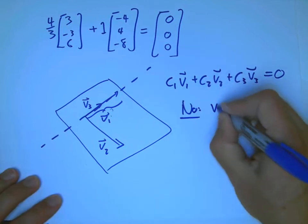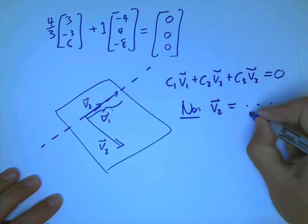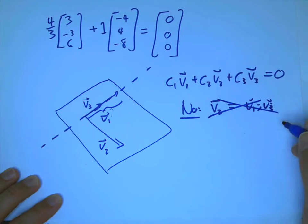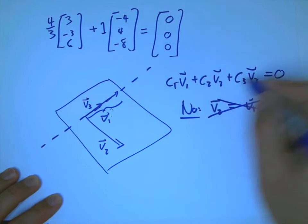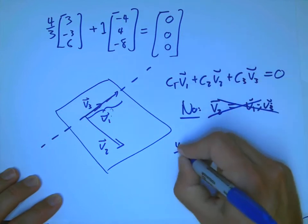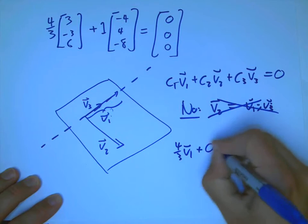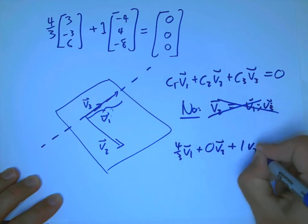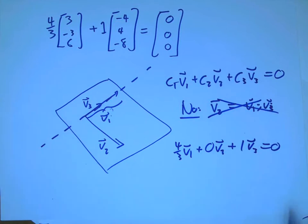I can't pick on V2 and say, in terms of V1, V3, something over here. Not going to work. Because the actual coefficients I had here were, of course, four-thirds plus zero plus one. Okay, so that's a bit of a special case.